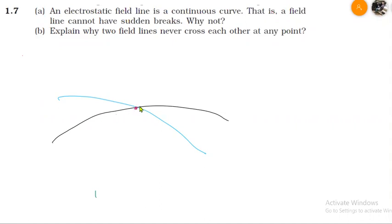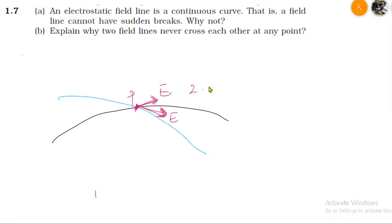When you look at the black field line, the direction of the electric field at that intersection point is given by the tangent. Similarly, for the blue line, the tangent gives another direction. At point P, this gives one electric field direction from the black line and another from the blue line — meaning there are two different directions of the electric field at the same point.